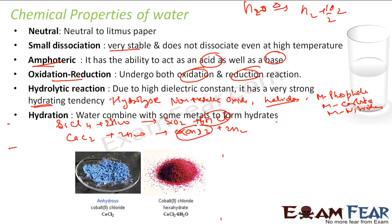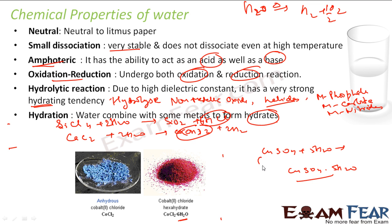The next property is hydration — water combines with some metal salts to form hydrates. For example, CoCl2, the moment you add water, becomes CoCl2·6H2O; from blue it becomes red. Another example: CuSO4, when you add 5H2O, becomes CuSO4·5H2O — it is white generally but becomes blue with water. Please note the difference between hydrolysis and hydration: in hydration there is no chemical reaction as such, you just add water and the color changes. But in hydrolysis, non-metallic oxides, halides, metallic phosphides, carbides, or nitrides react with water to form acids or bases.